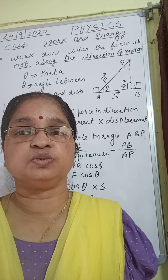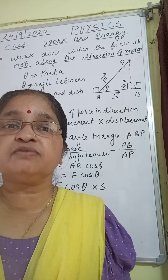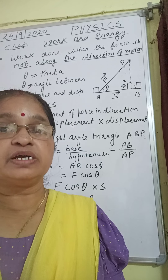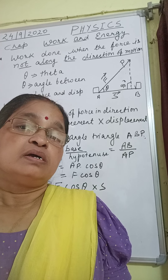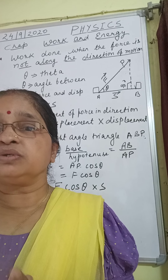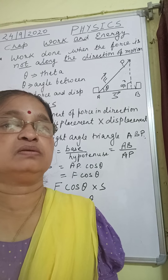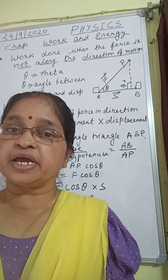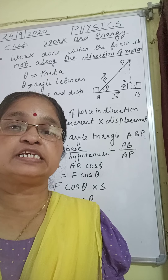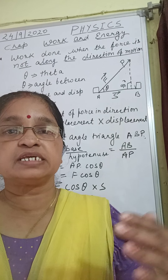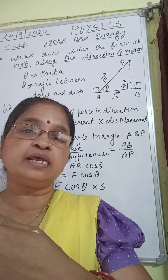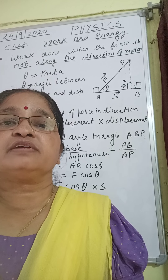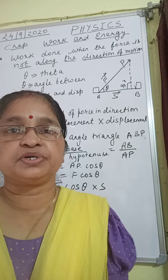What is 1 joule? 1 joule of work is done — or you can say 1 joule is the amount of work done when 1 newton of force is applied on an object and displaces it 1 metre in the direction of the applied force. You also know that work is a scalar quantity.